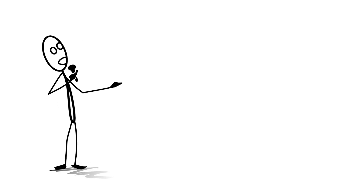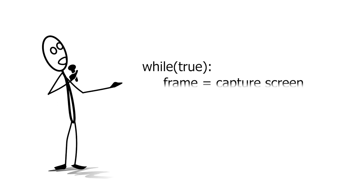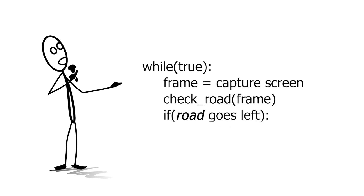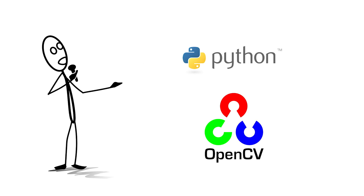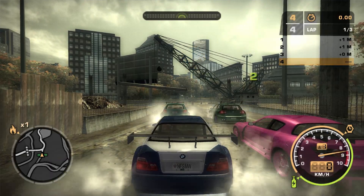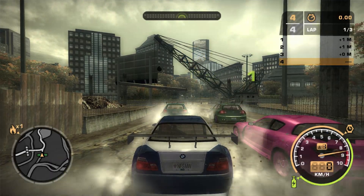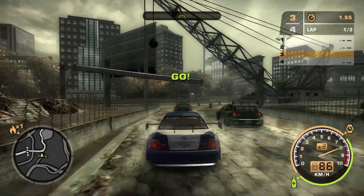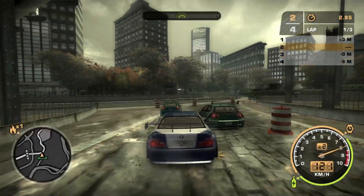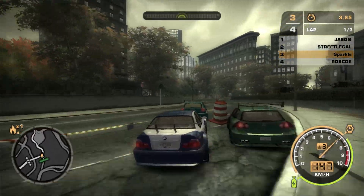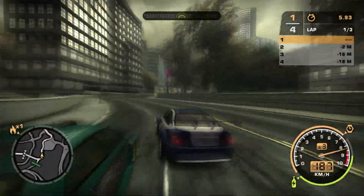Our AI will be a background process which records the game screen, analyzes it, makes decisions and sends keyboard input back to the game. We will code everything using only Python and OpenCV. The code is publicly available on GitHub and the link is in the video description, so feel free to play with it as you wish. We will describe the whole process in 5 easy steps.